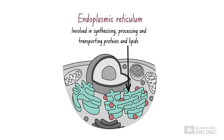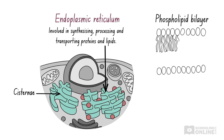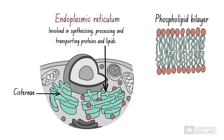The endoplasmic reticulum joins the nuclear membrane that surrounds the nucleus to the cell membrane. It consists of a network of flattened, interconnected membranes, which are referred to as cisternae. The cisternae are composed of one phospholipid bilayer, which is made from two layers of phospholipid molecules. These phospholipid molecules are comprised of a phosphate head and a fatty acid tail. We'll discuss the phospholipid bilayer in our upcoming videos on the cell membrane.